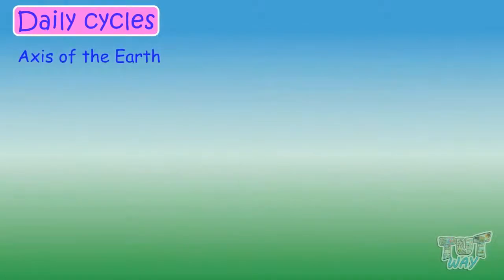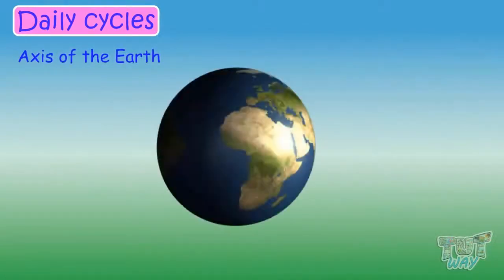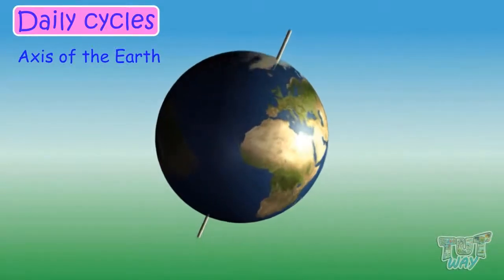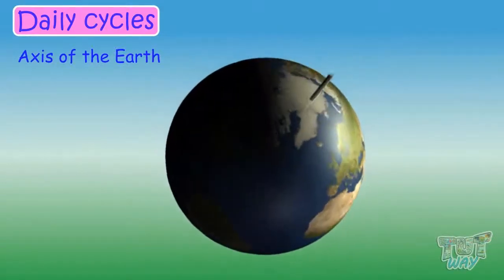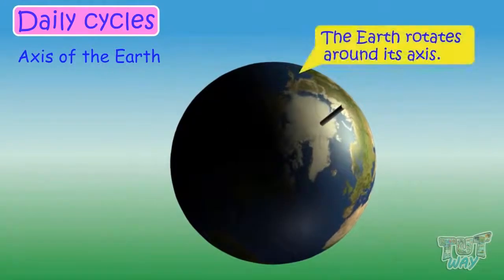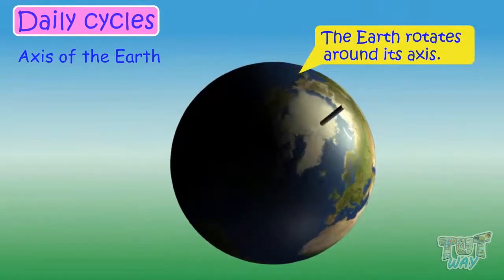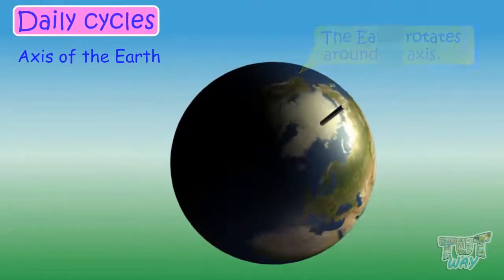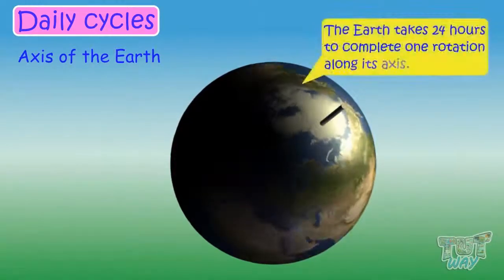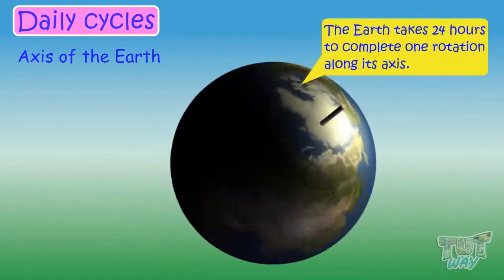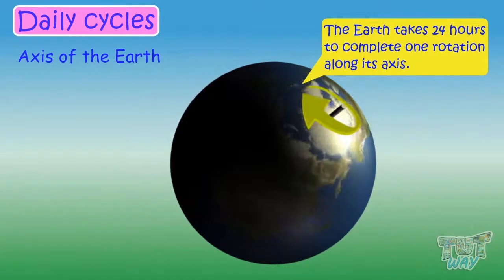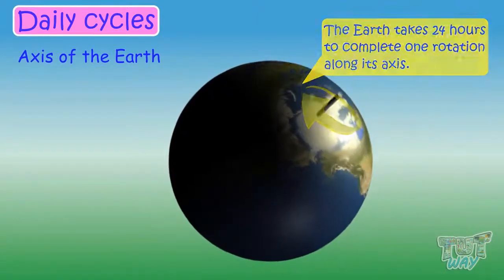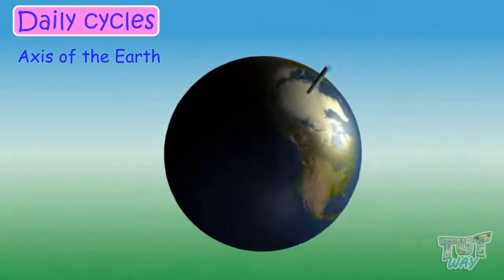First of all, let's see what is the axis of Earth. The axis is a straight line passing through the center of the Earth, and our Earth rotates around this axis, like this. It takes 24 hours to complete one rotation along its axis, and this rotation is the reason for what we see as day and night.